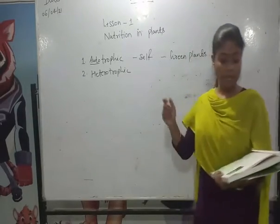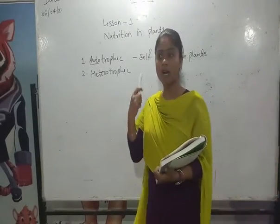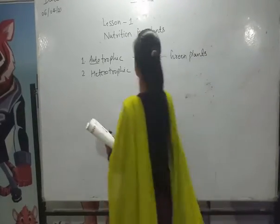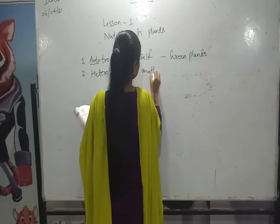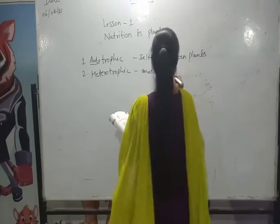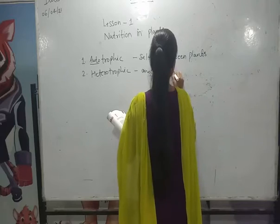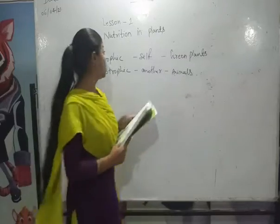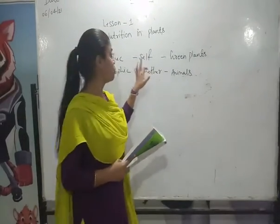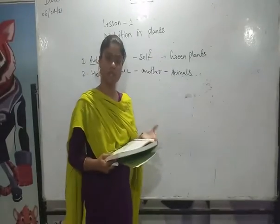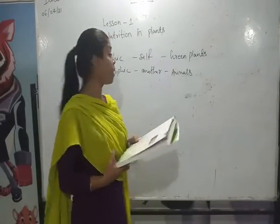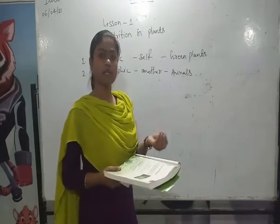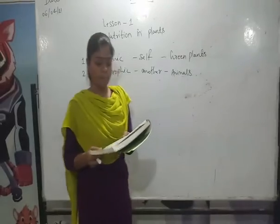The term Heterotrophic means derived from other organisms or other products. Hetero means another. So heterotrophic organisms depend on others for their food. The example of heterotrophic organisms is all animals and non-green living organisms. So this term is now clear: autotrophic means self-feeding, heterotrophic means dependent on others.